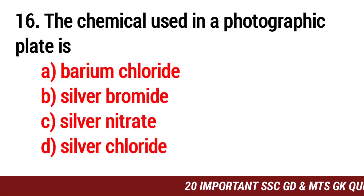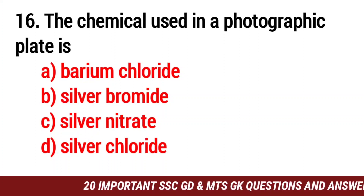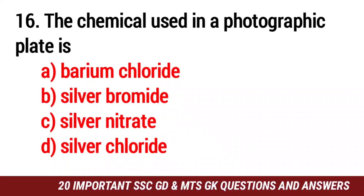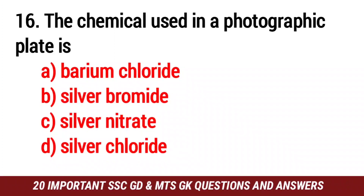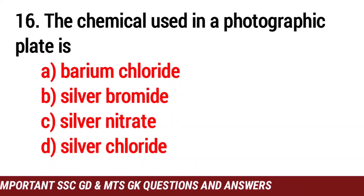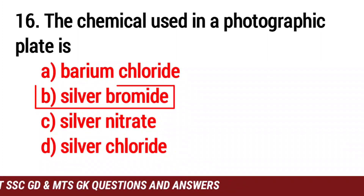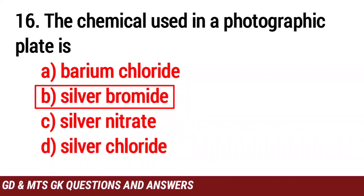Question number 16. The chemical used in a photographic plate is? The answer is option B. Silver Bromide.